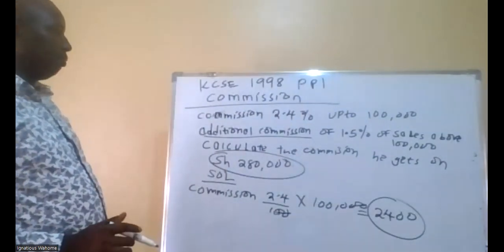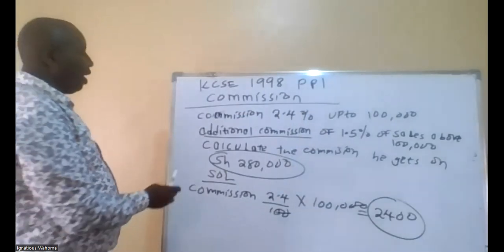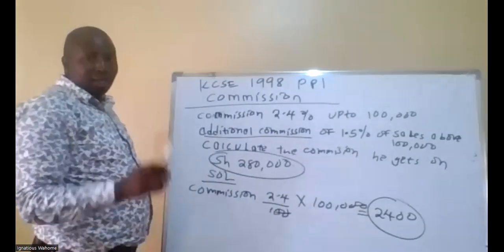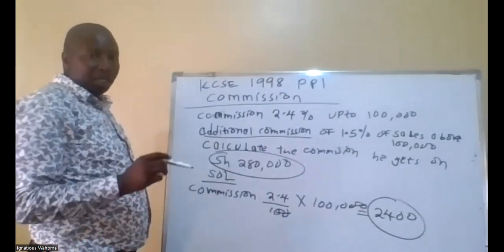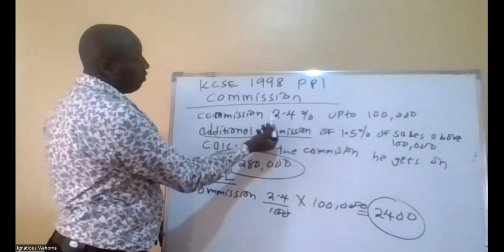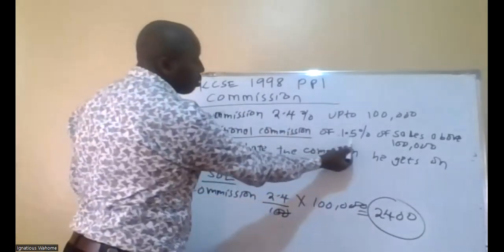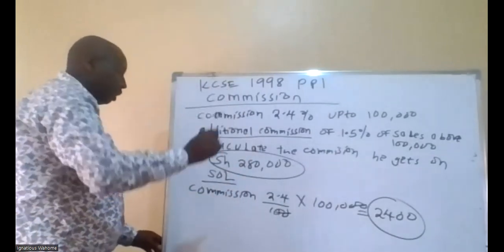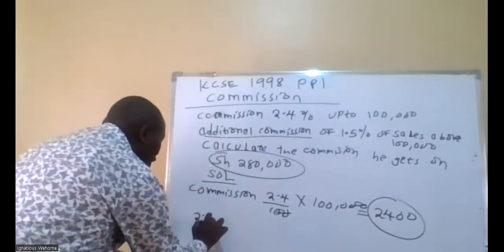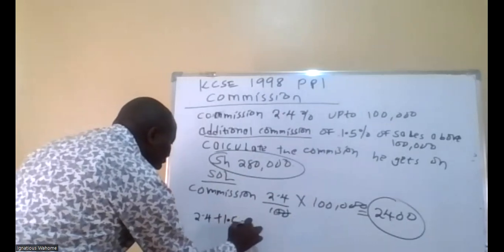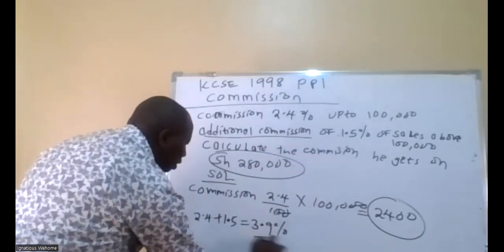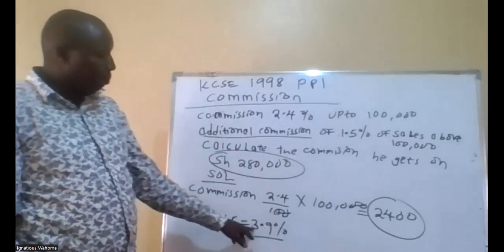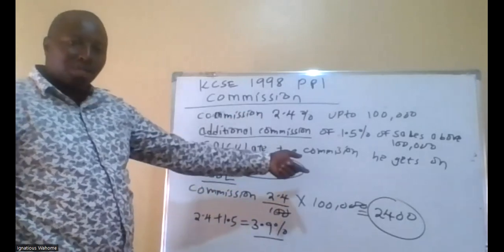Now, the second commission. When we talk of the word 'additional commission' — additional commission of 1.5% — you are supposed to get the first commission of 2.4 plus 1.5. That keyword 'additional' means adding from the previous one. So 2.4 plus 1.5 comes to 3.9%. Therefore, the examiner wants you to calculate with 3.9% on sales above 100,000.